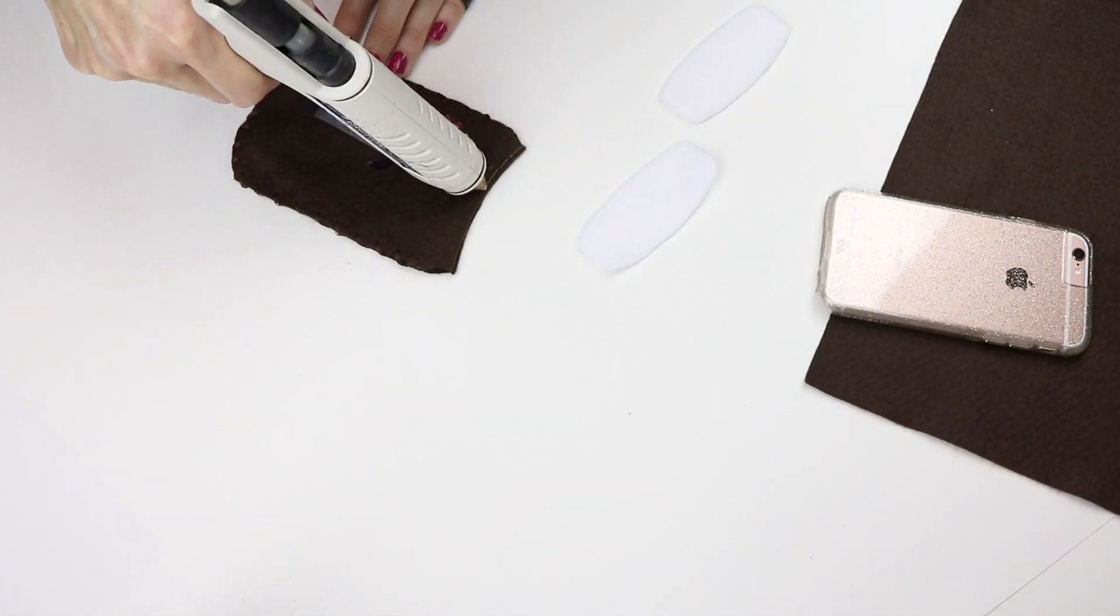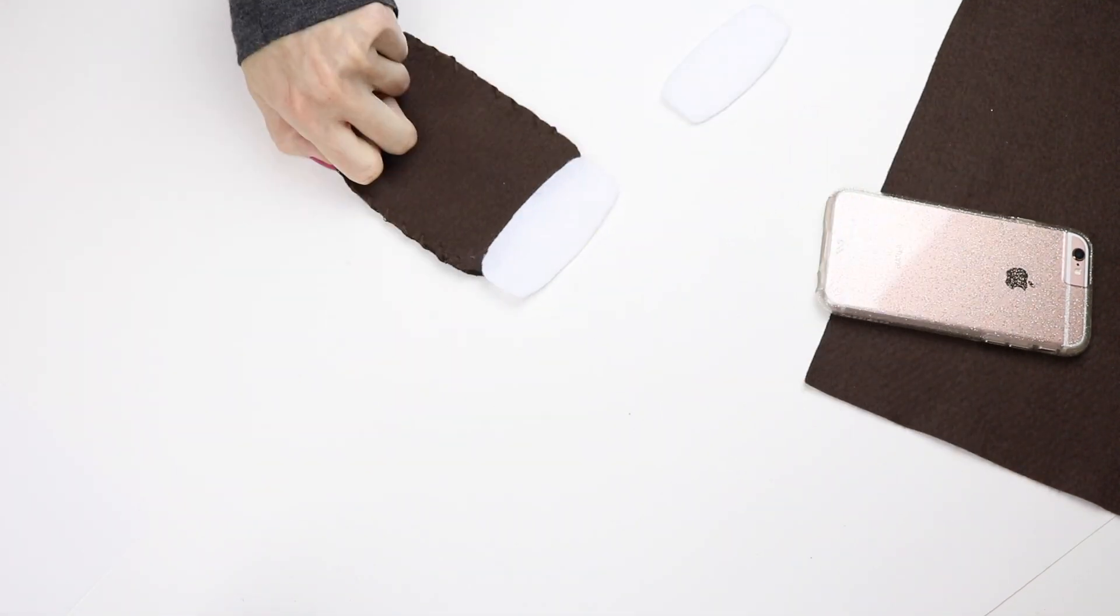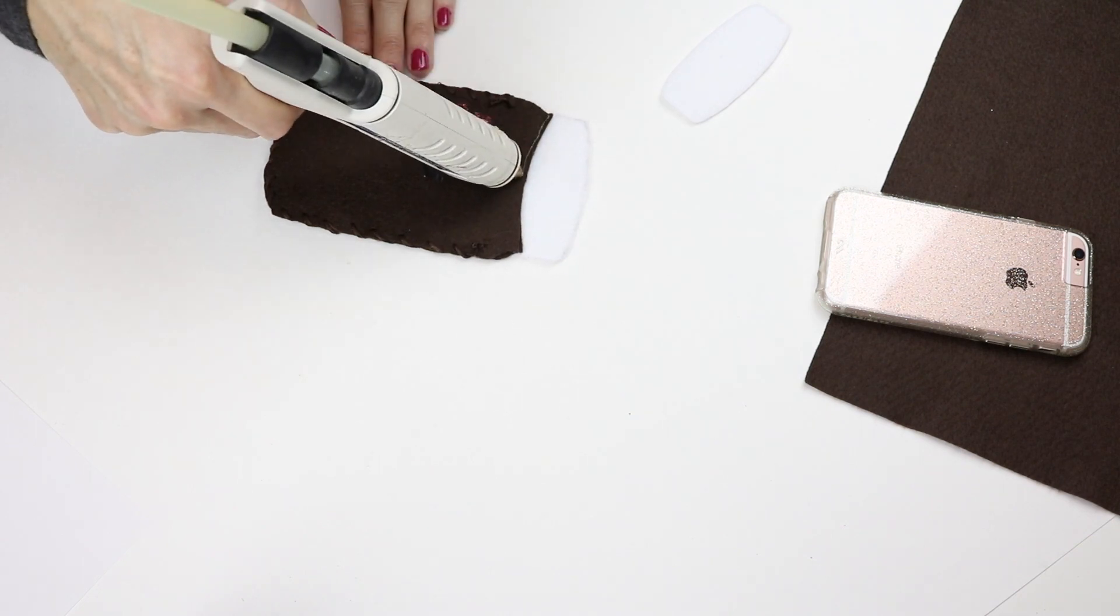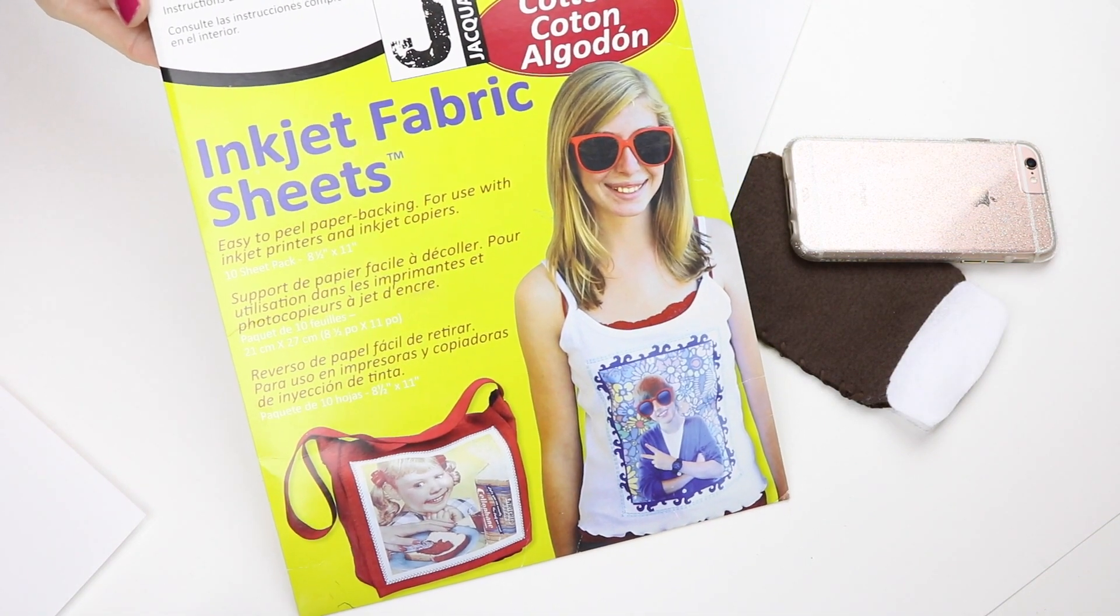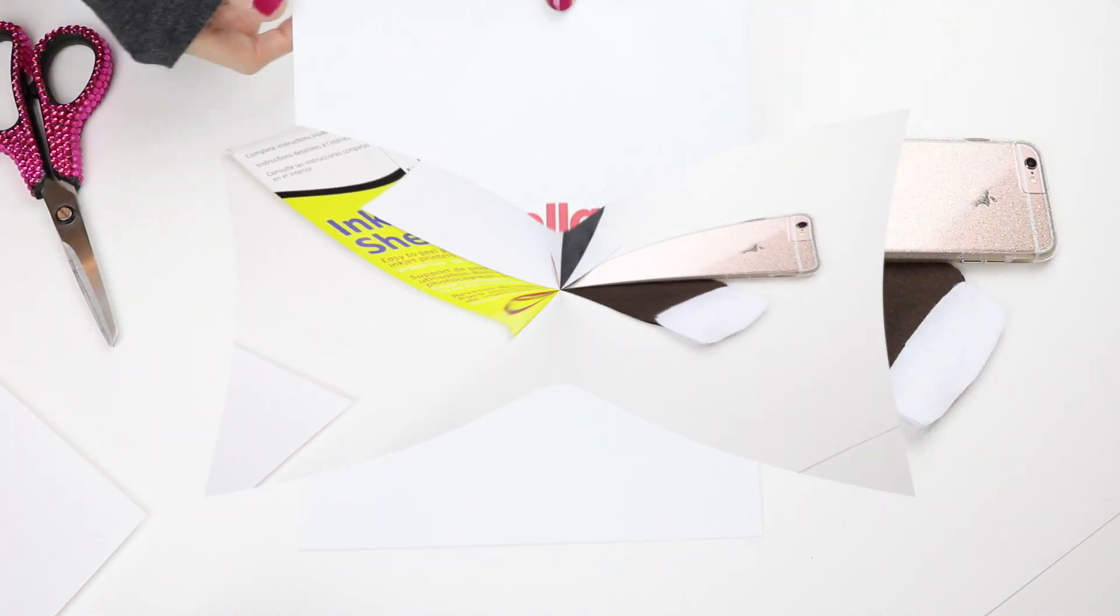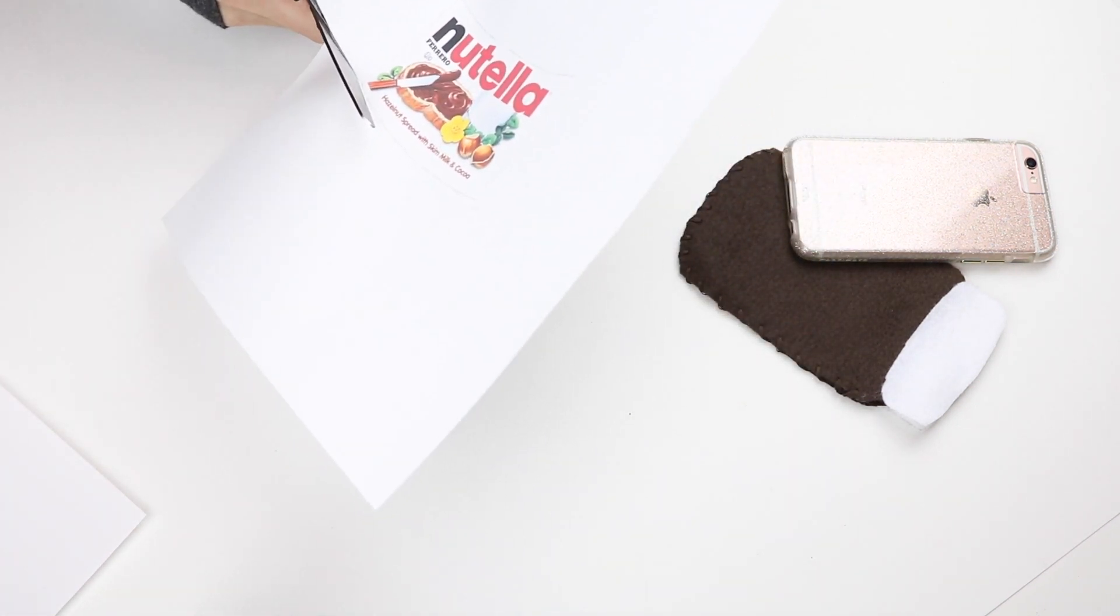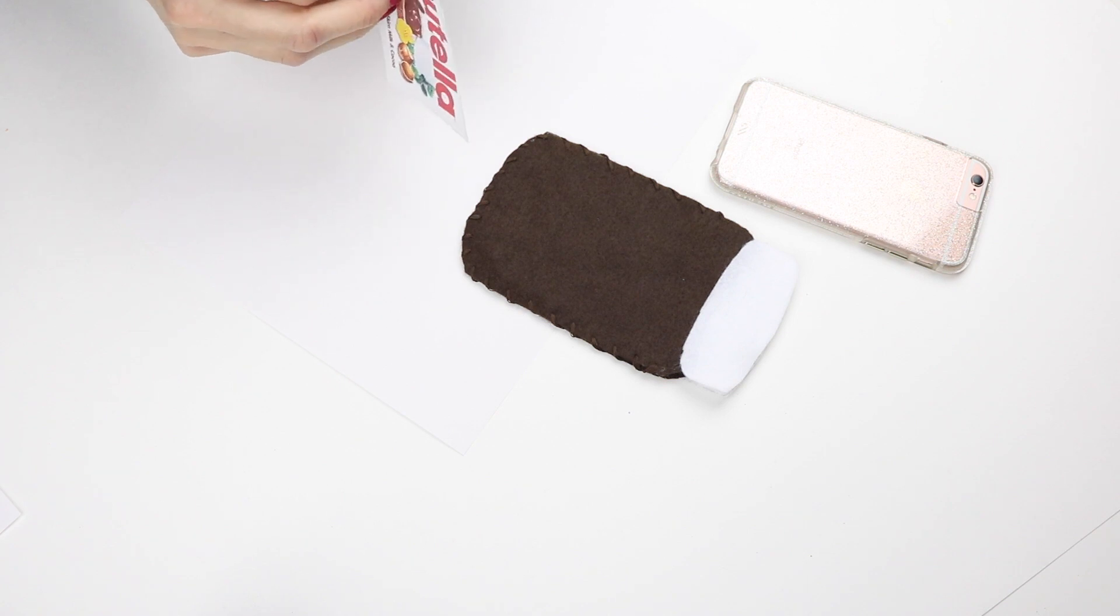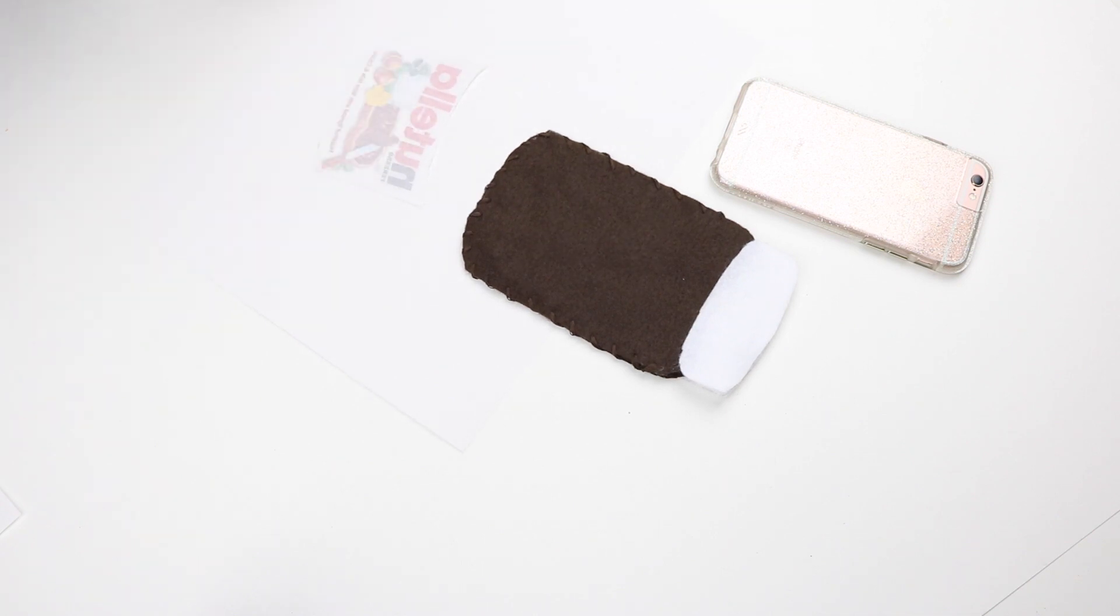Next I just applied some hot glue to the top of the brown and glued my white lids on. Then I used these inkjet fabric sheets to print out the Nutella logo. I sketched around the logo and then cut that out. These have a backing on them so I peeled that backing off and then applied hot glue around the edges and glued that onto the brown felt.